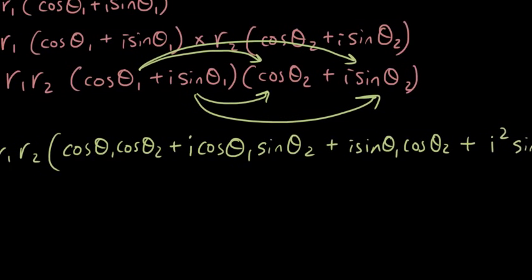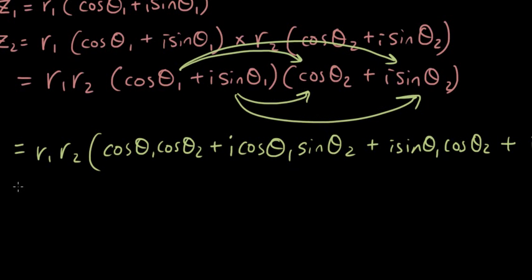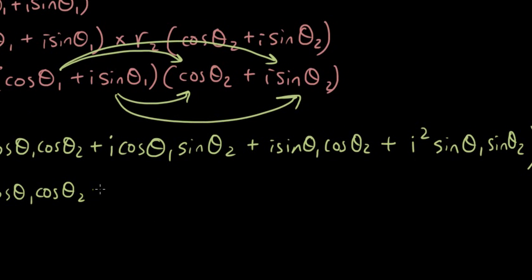Let's now try and simplify this huge line. So I'm going to factorize the i out. I'm going to copy this section down first. So I have cos θ1 cos θ2 plus, I'm going to copy this section down, except i squared is the same as minus.